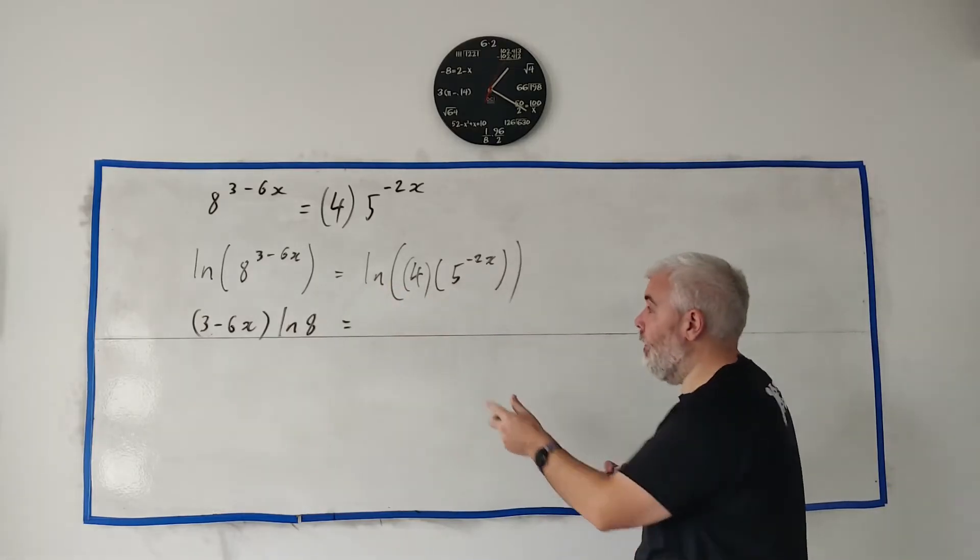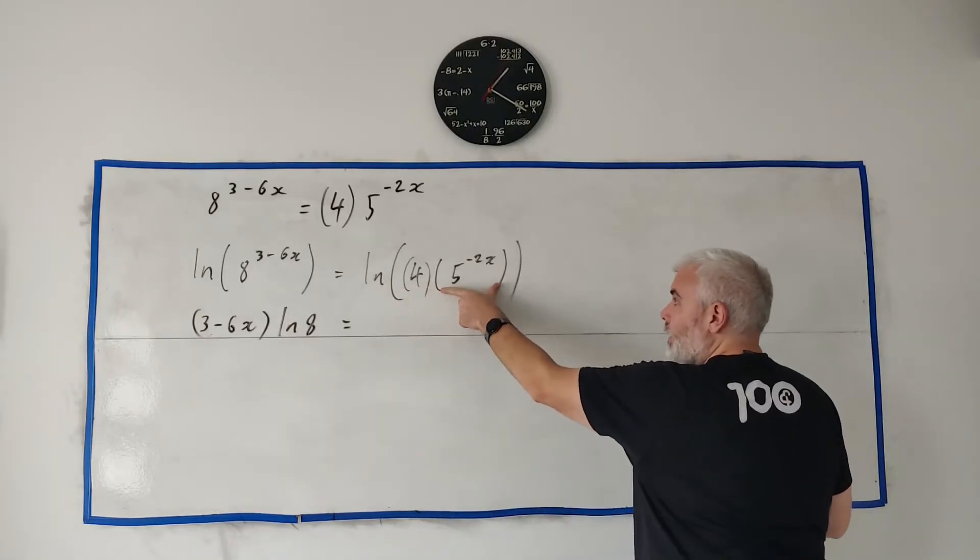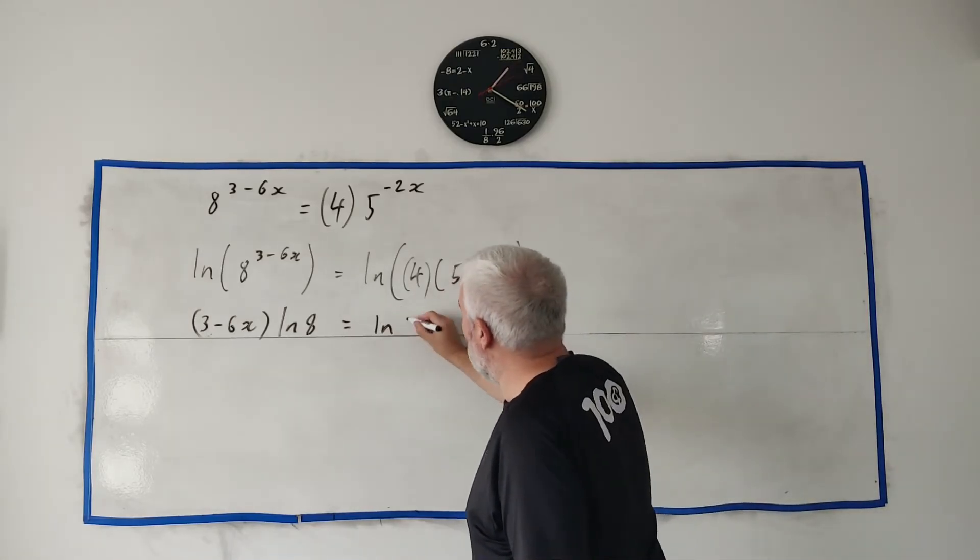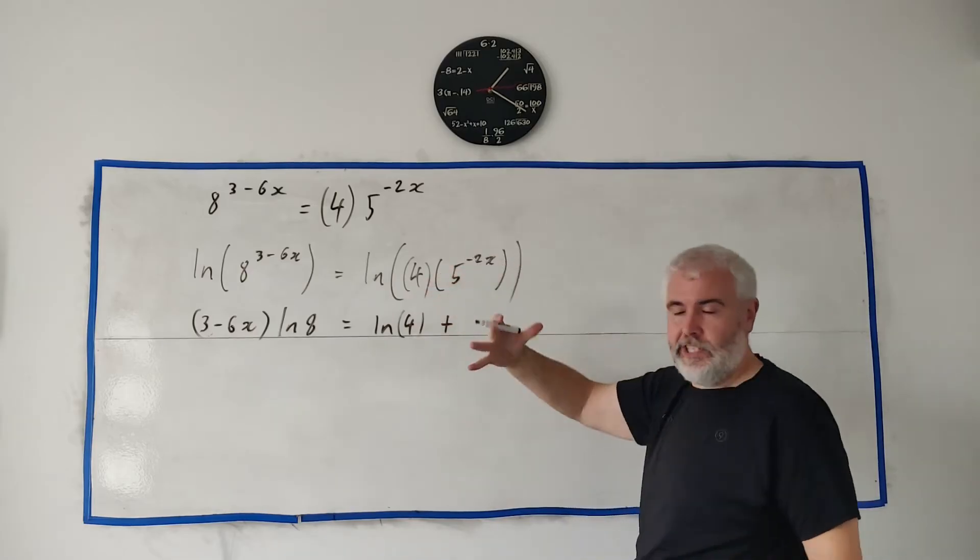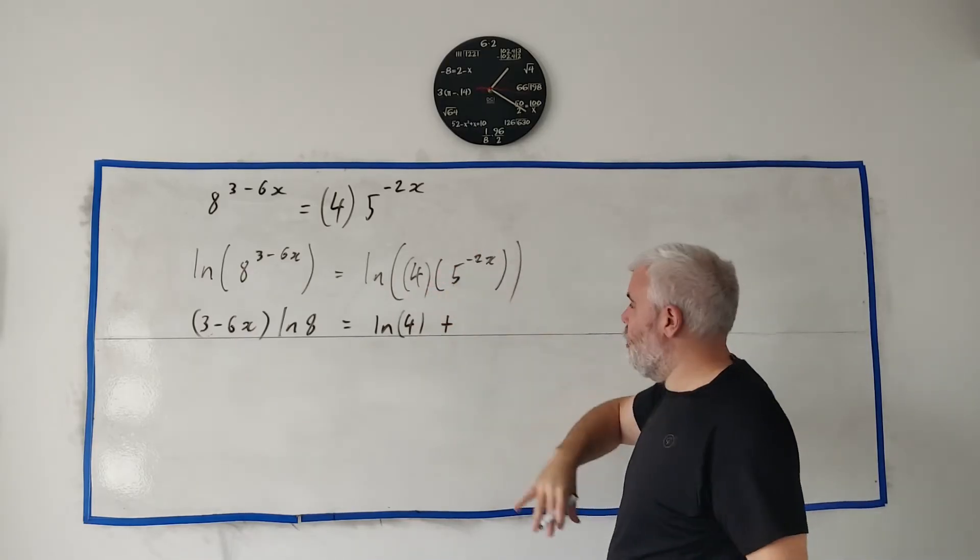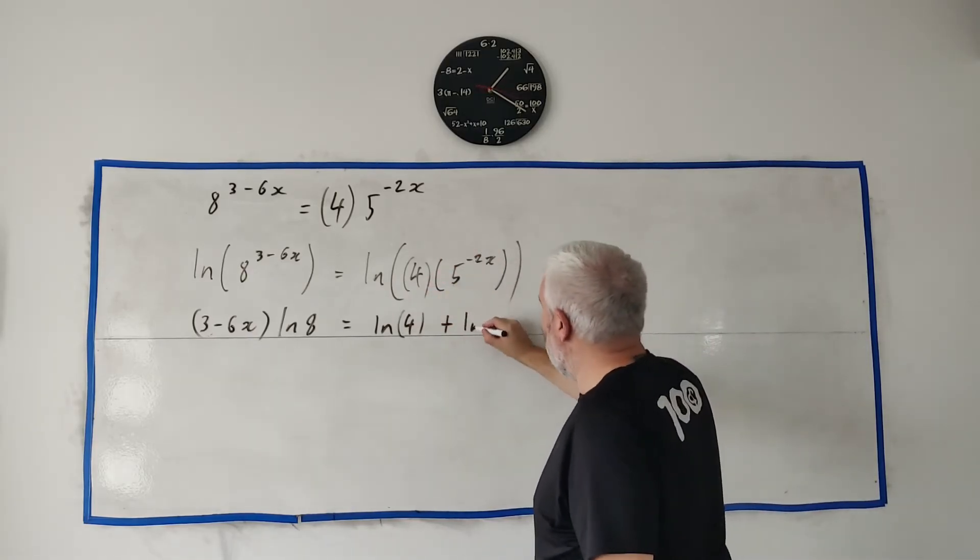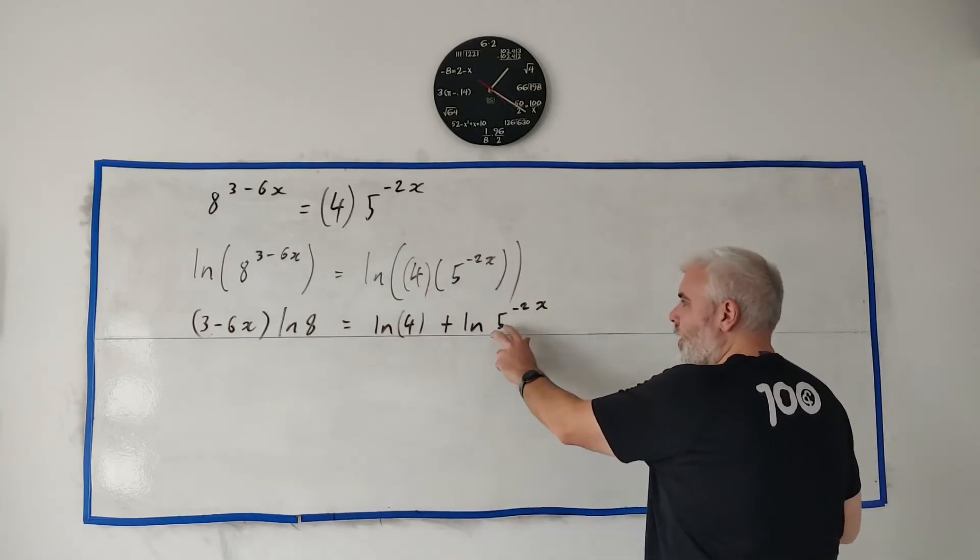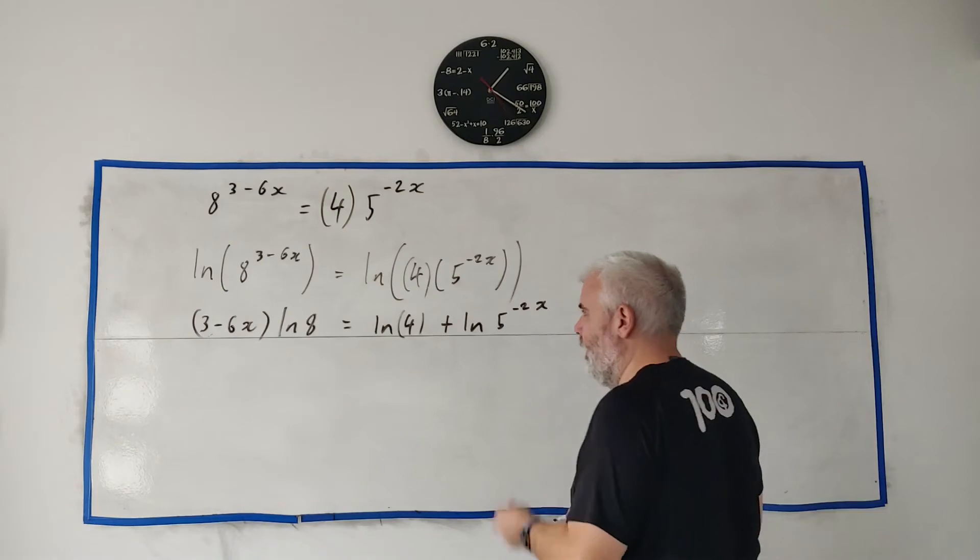Like here, 4 is multiplying by this term 5^(-2x). We can change that into natural log of 4 plus—multiply turns into plus, divide turns into take away—plus natural log of 5^(-2x). And of course this, we can do the same method as here.